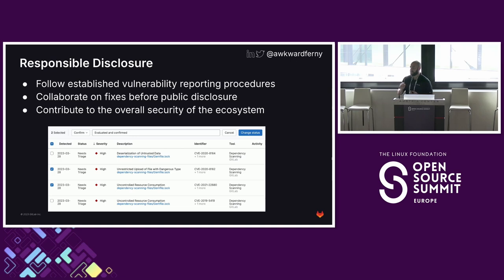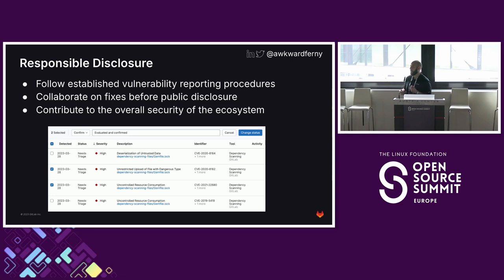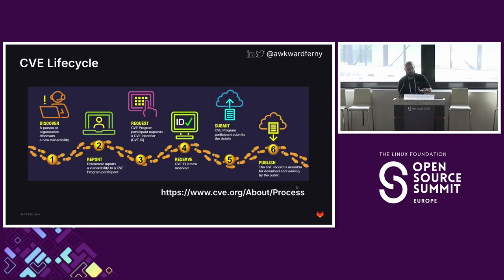Responsible disclosure is also important — making sure that when you find a vulnerability, you follow best practices on disclosing it. Most often that means disclosing it privately to the community maintainers and going through a formal process. You disclose the vulnerability privately first so that a fix can be pushed before it's publicized, ensuring no malicious actors become aware of the vulnerability before there's a remediation or mitigation solution in place.